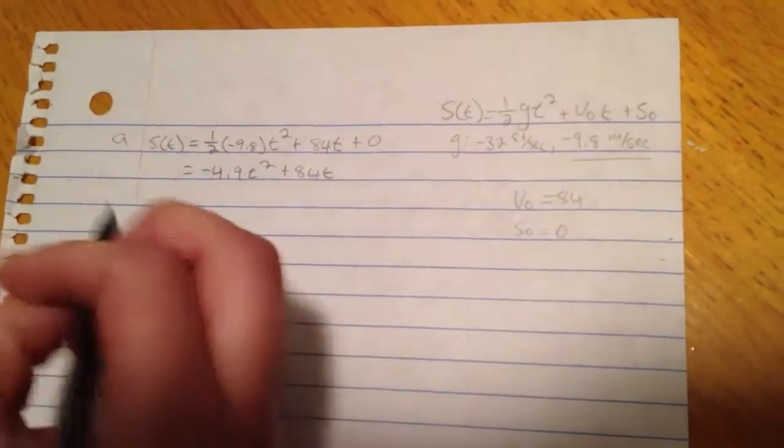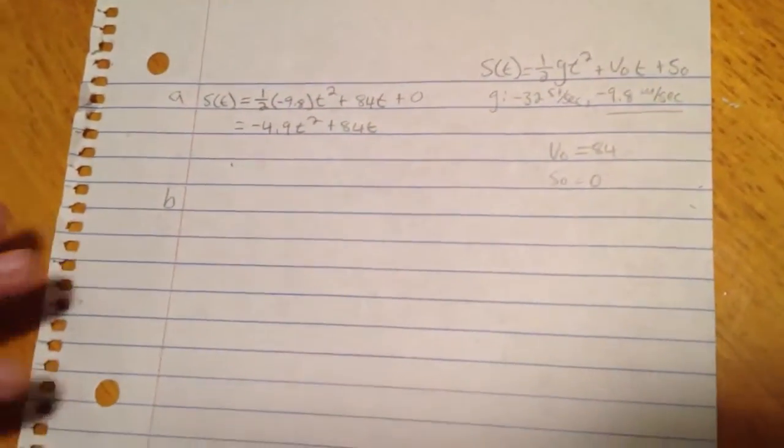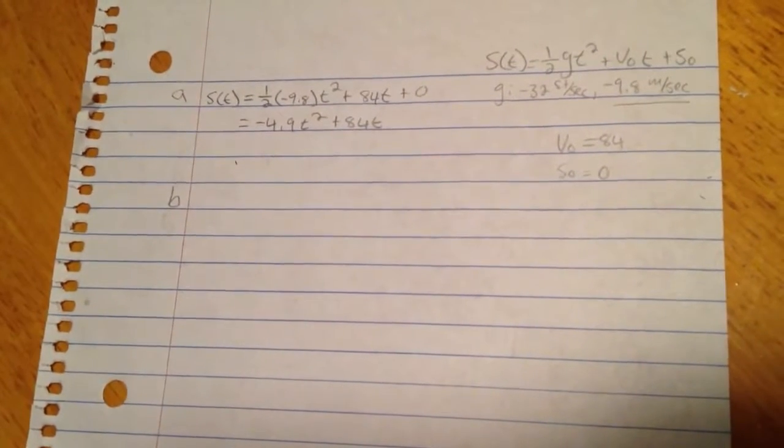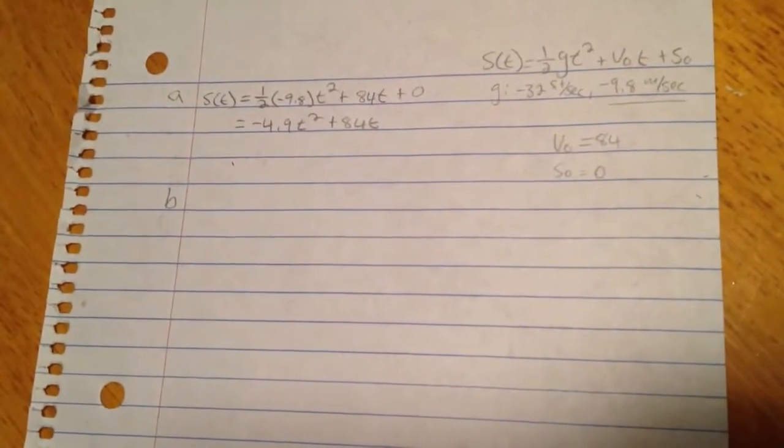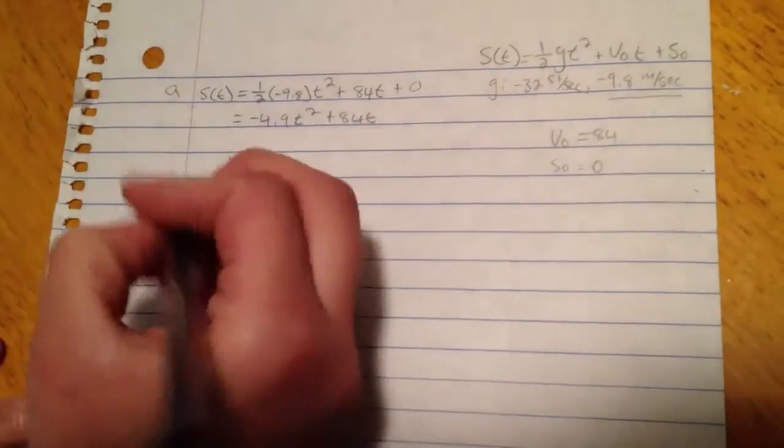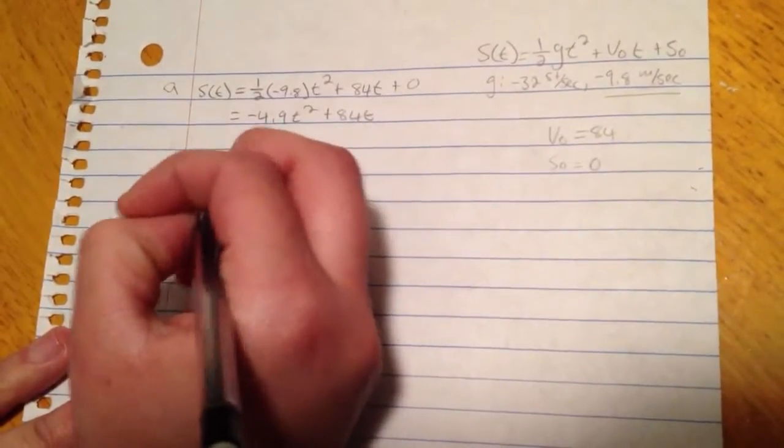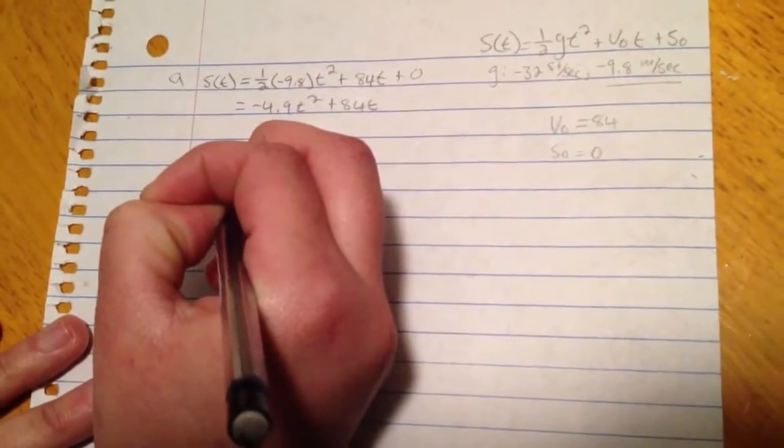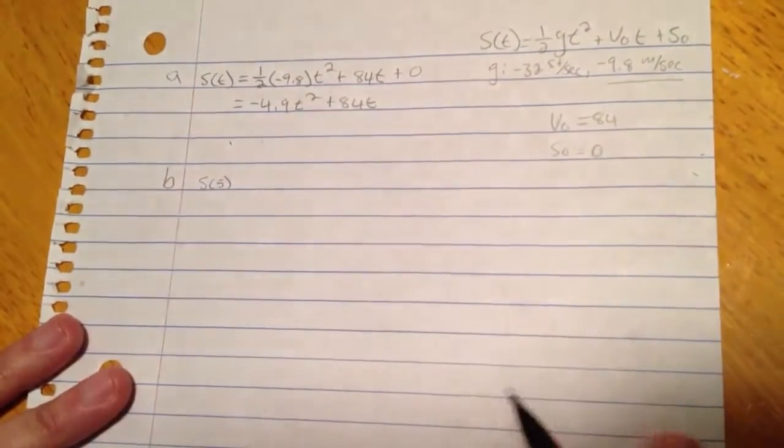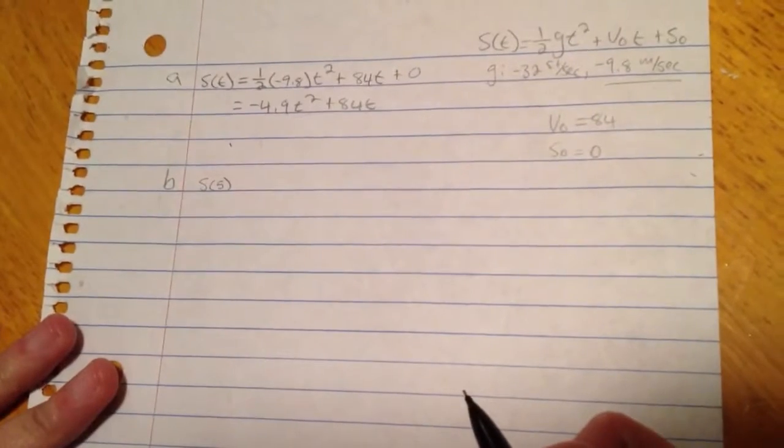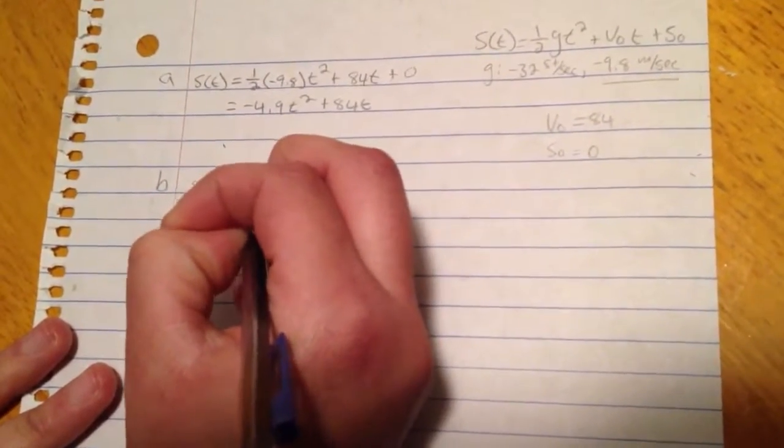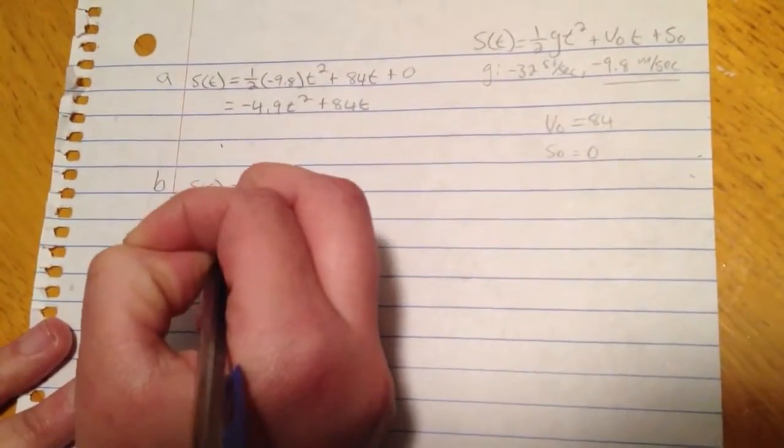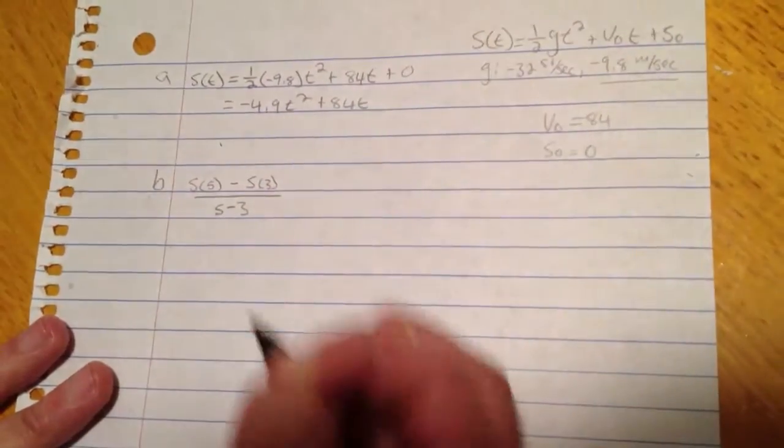The second question asks us to find the average velocity of the projectile from 3 seconds to 5 seconds. So the way we're going to do this is change in distance, which is s(5) minus s(3) over the change in time, which is 5 minus 3.